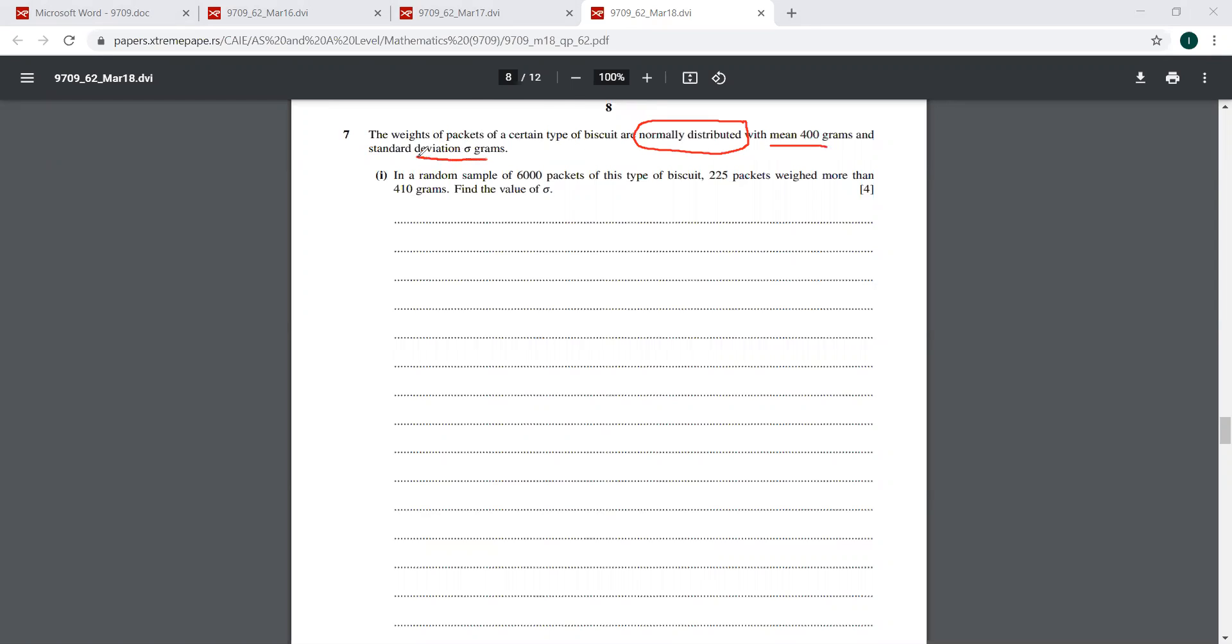The mean is 400 grams. Now he has kept the standard deviation unknown here. So I'll first write it as X is normally distributed with mean 400 and the variance. You have to put a square on the sigma here. This is the variance with us.